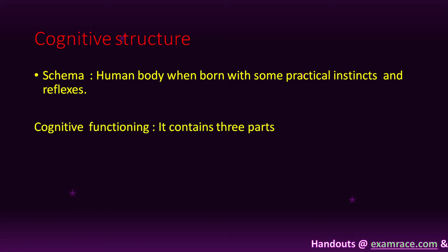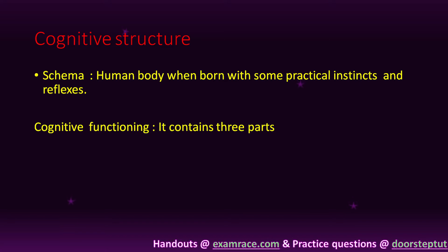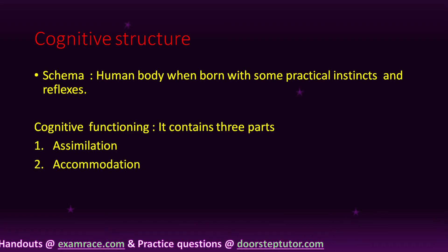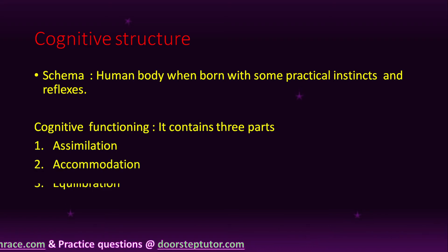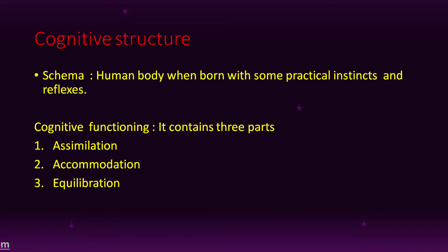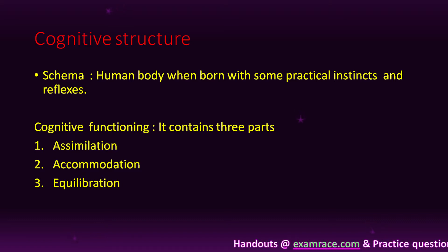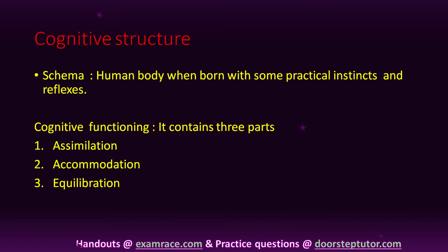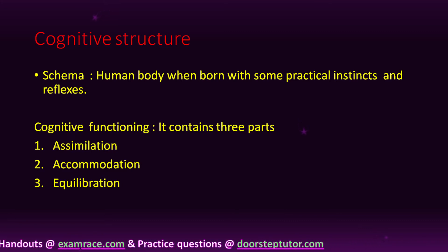Now we see what is cognitive functioning. Cognitive functioning is divided into three parts. First one is assimilation, next one is accommodation, and the third one is equilibration. Now we understand what is assimilation, what is accommodation, and what is equilibration. Assimilation is adding something into an existing schema.